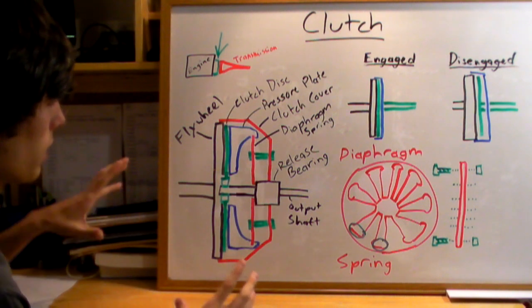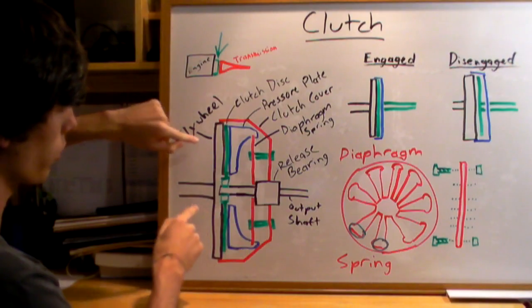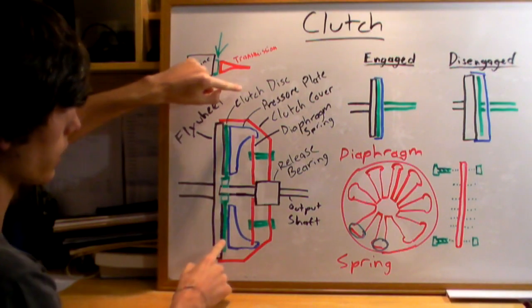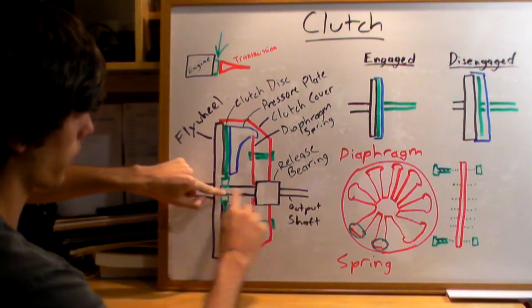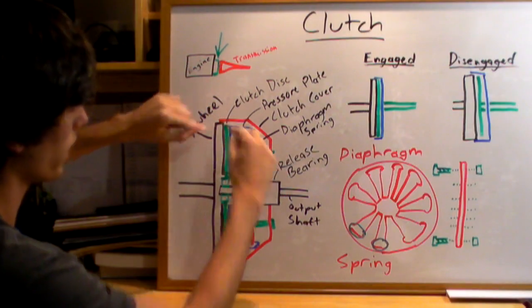One thing to keep in mind when you're looking at this: everything is rotating with the flywheel, except for this green disc right here, the clutch disc, and the output shaft. Everything else is going to be rotating with the flywheel, it's all connected.